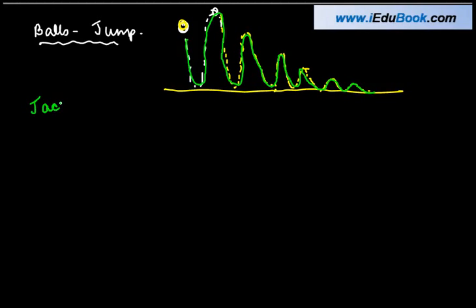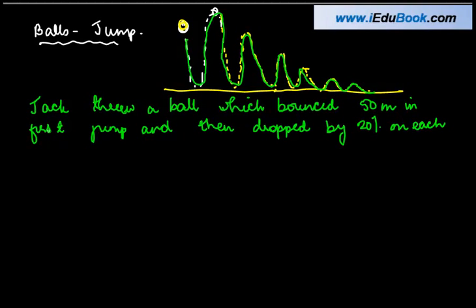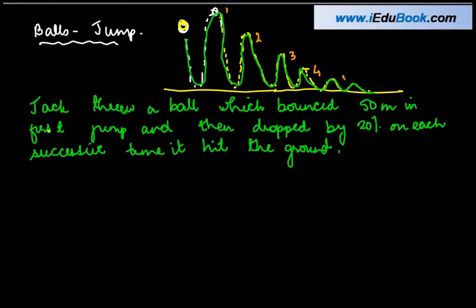So let's say Jack threw a ball which bounced 50 meters in first jump and then dropped by, let's say 20% on each successive time it hit the ground. So let's call these jumps as jump 1, 2, 3, 4, 5, 6.